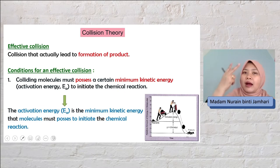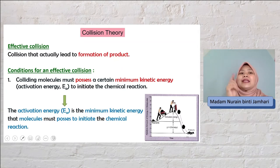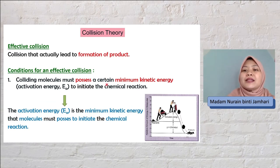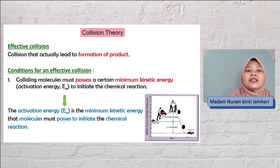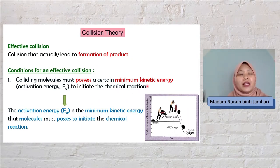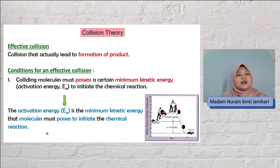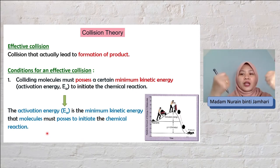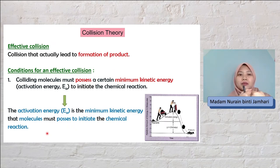To achieve effective collision, there are two conditions. The first condition is that the molecules that are colliding must possess a certain minimum kinetic energy that we call activation energy, to initiate the chemical reaction. Activation energy is the minimum kinetic energy that molecules must possess to initiate the chemical reaction — the colliding molecules must have at least that minimum kinetic energy, equal to EA for that reaction.